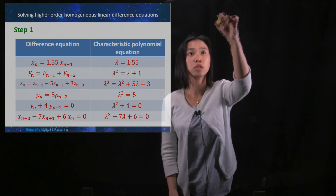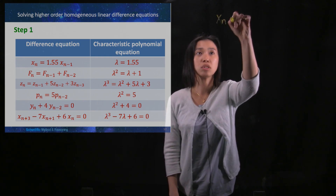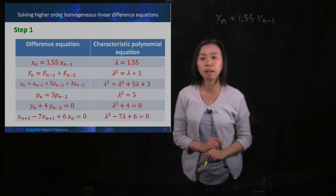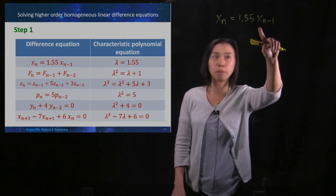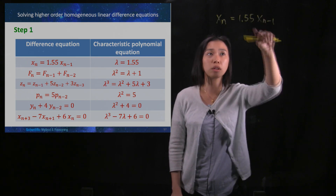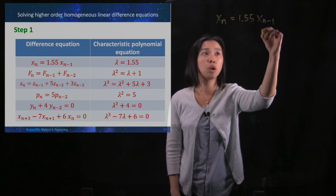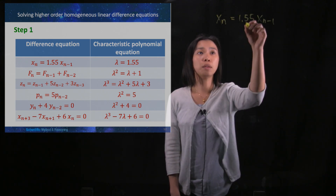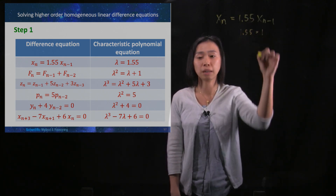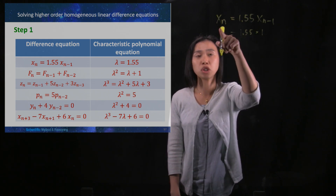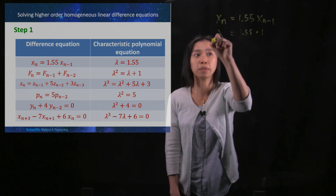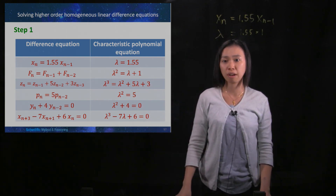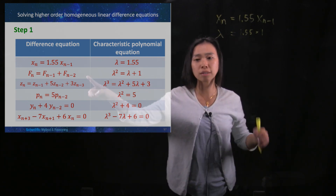Starting with the first example: xn = 1.55·xn-1. Since xn depends on the previous one term, xn-1, we change xn-1 to 1 and keep the coefficient 1.55. The next term becomes lambda. So the characteristic polynomial is lambda = 1.55.